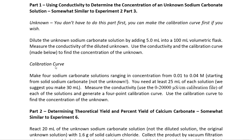For the calibration curve, you're going to make four sodium carbonate solutions ranging in concentration from 0.01 to 0.04 molar, starting with solid sodium carbonate. Don't start with the unknown since you don't know its concentration. You're going to make the 0.04 molar solution and then dilute it down to 0.03, 0.02, and 0.01 molar. You need at least 25 milliliters of each solution in a 50 milliliter beaker for the conductivity probe to work, but we suggest you make 30 milliliters. Use C1V1 = C2V2 for your dilutions.